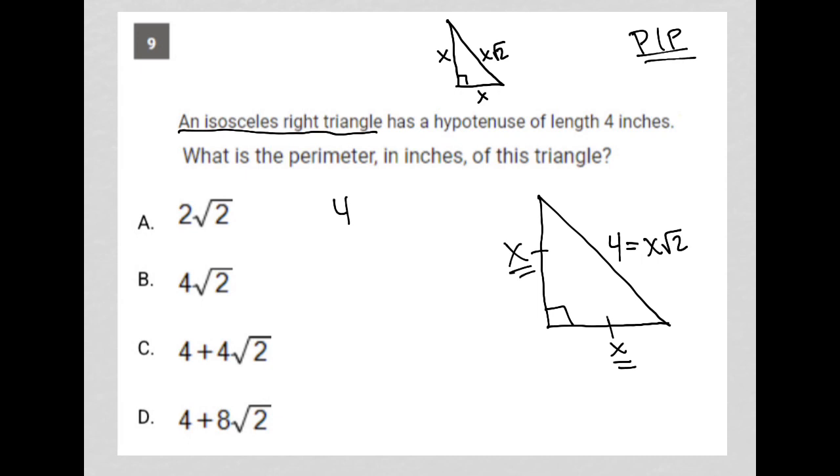So, I'm going to take 4 equals x root 2. I'm going to divide both sides by root 2. So, I have x equals 4 over root 2. I'm going to rationalize this because we don't like to have radicals in the denominator. So, this becomes 4 square root 2 over root 2 times root 2 is just 2. I can simplify this further because 2 goes into itself once, 2 goes into 4 twice. So, this ends up being x is equal to 2 root 2.